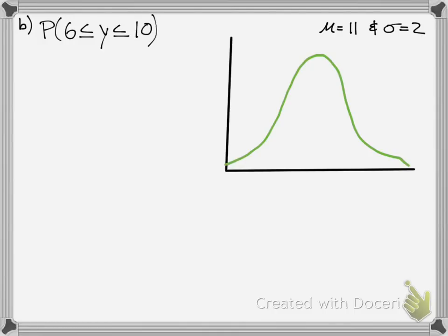You have y as your 6, so 6 minus the standard deviation, or sorry, minus the mu, or the mean, minus 11 over the standard deviation, which is 2. And then you have 10 minus the mean over the standard deviation. And that's our z-value in between there.